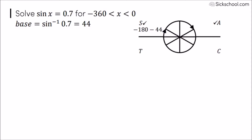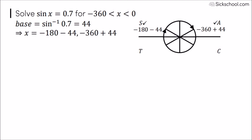Minus 360 plus 44 — tick, an answer. Minus 360 is the end of range. So the answers are, simplified.